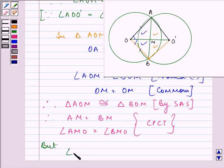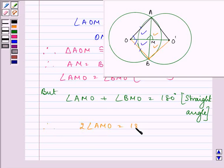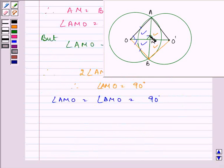But as you can see that angle AMO plus angle BMO will be equal to 180 degrees, that is this angle plus this angle has to be equal to 180 because they are forming a straight angle, and we are also given that they are equal to each other. So therefore twice angle AMO is equal to 180, that is angle AMO will be equal to 90 degrees. Since angle AMO is equal to angle BMO, they both will be equal to 90 degrees.